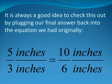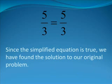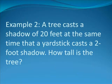It is always a good idea to check this out by plugging our final answer back into the equation we had originally. 5 inches divided by 3 inches is equal to 10 inches divided by 6 inches. Simplifying, 5 over 3 is equal to 10 over 6, and 10 over 6 is equal to 2 times 5 divided by 2 times 3, which is equal to 5 divided by 3 because the 2's cancel. Thus, we have found our final answer and verified it.